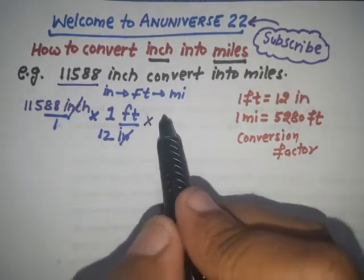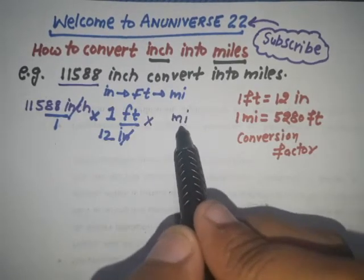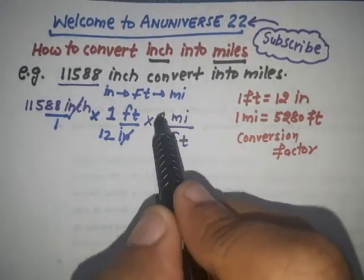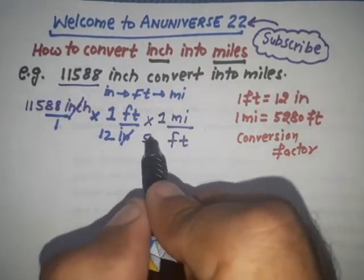That is multiplied with miles at the top and feet at the bottom. One mile equals 5,280 feet.